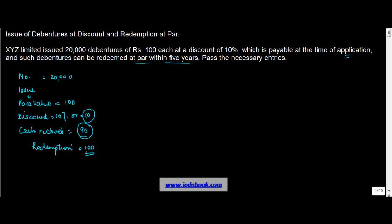Why? Because the debenture has to be redeemed at par. Now, let us see what will be the accounting entries in this case. The first entry is when you receive the money at the time of application.